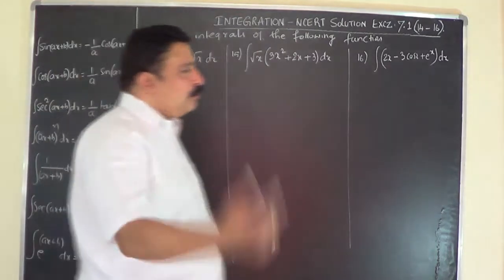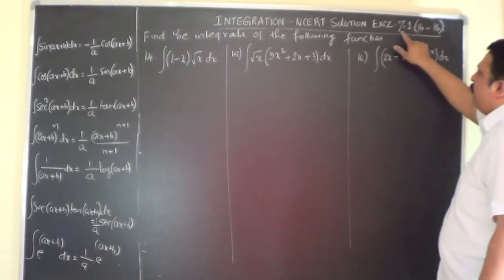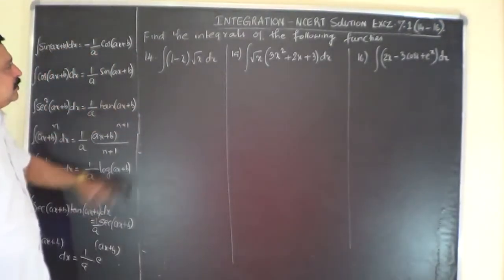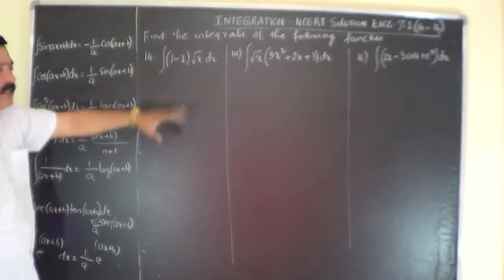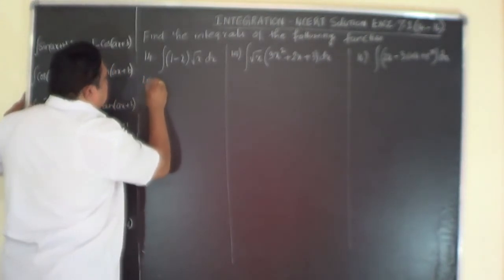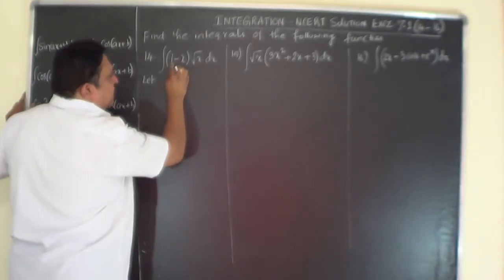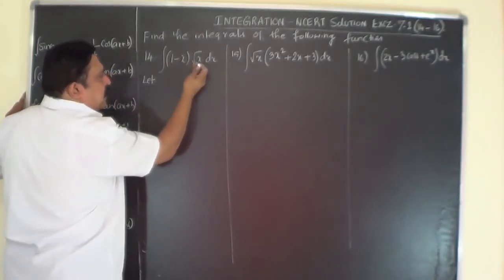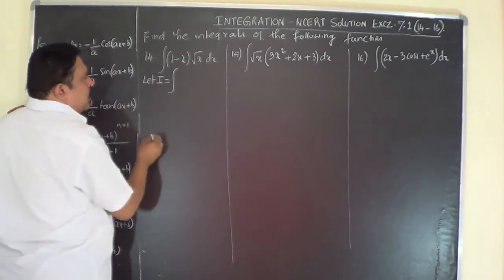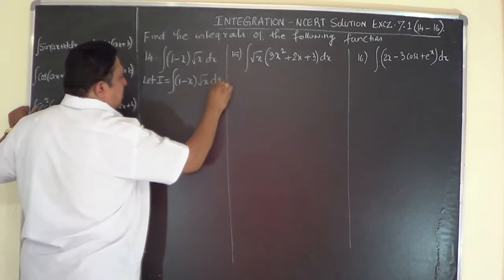We will now consider the next three problems: problem numbers 14, 15, and 16 of Exercise 7.1. Problem number 14: integrate ∫(1 - x)√x dx. If you observe this problem, it is very easy to understand that it is 1·√x minus x·√x — just multiply and then separate. Let me call this as I, so let I be equal to ∫(1 - x)√x dx.